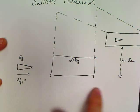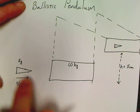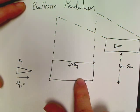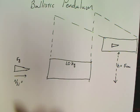Well, I'm going to do this one. This is the most common. It's an example in the book. It tells us a 5-gram bullet is shot at a 1-kilogram block. The block then raises up 5 centimeters into the air over here.